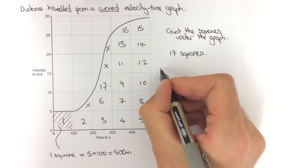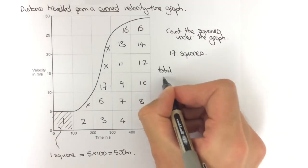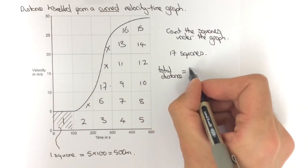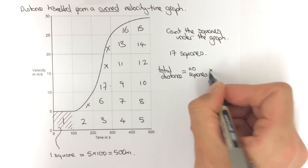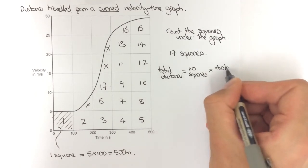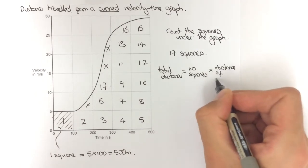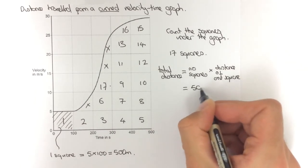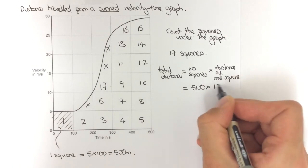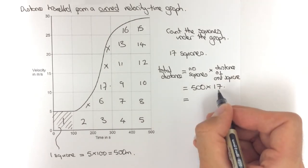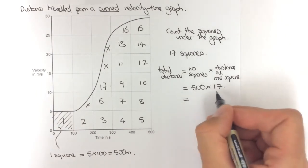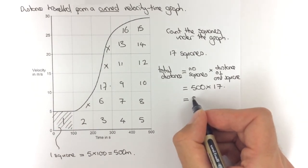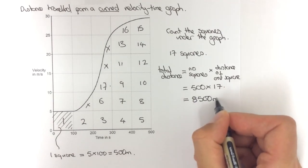So now to find the total distance travelled I would do the number of squares times by the distance of one square, which would give me 500 times 17, which would give me 1,000 times 17 over 2, which would give me 8,500 meters.